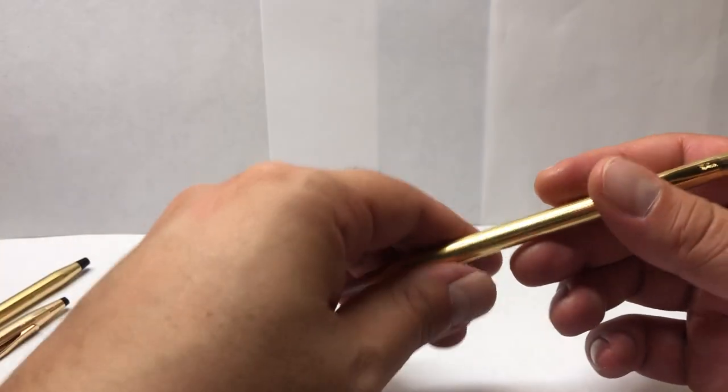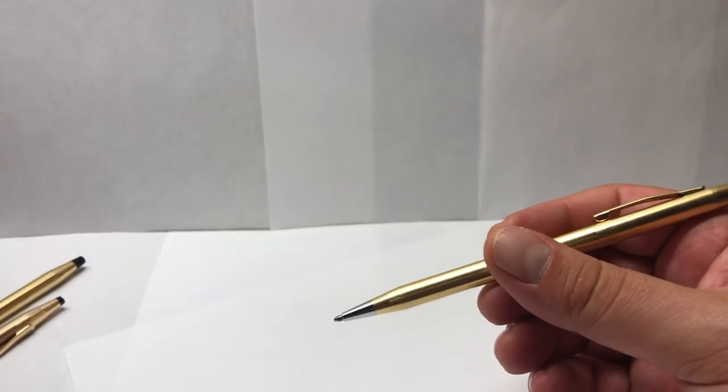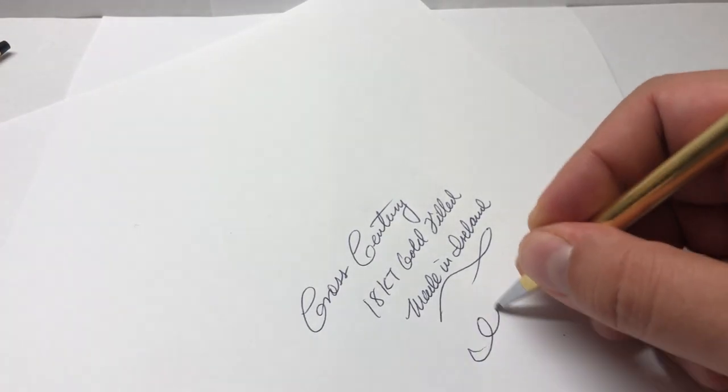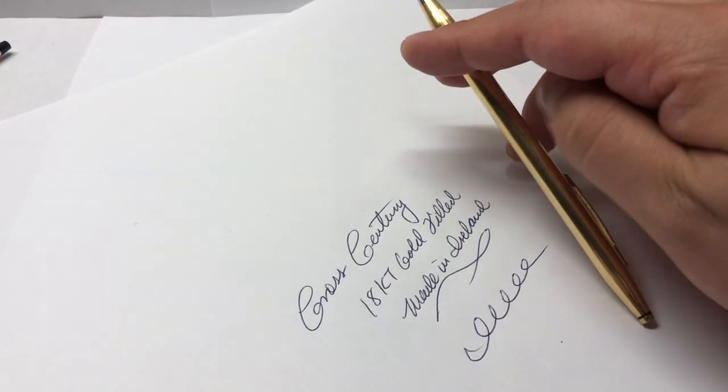Let's give it a quick spin over here on paper. So this is the Cross Century 18 carat gold-filled, this is made in Ireland, but it was also made in USA. I'm using a Schneider ballpoint refill which writes fairly good and it's very reliable.